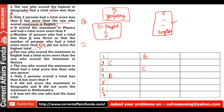Next clue: the one who scored the maximum in English had a total score more than the one who scored maximum in History. So the English scorer's rank is better than the History scorer's rank — History comes below English. Then: the one who scored maximum in Hindi had a total score less than only one person — meaning Hindi scorer's rank is second, with only one person above them.